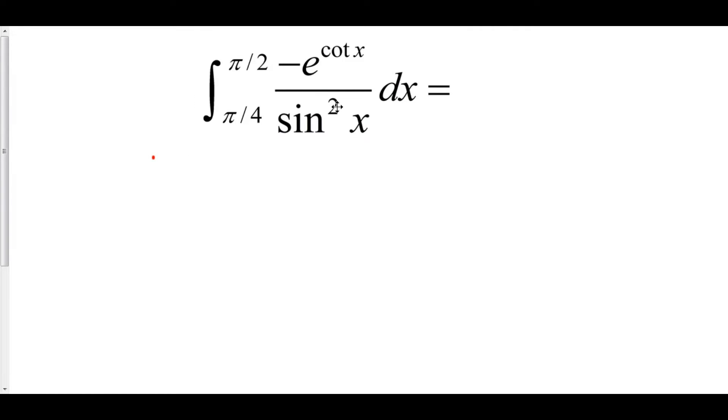Now what about sine squared of x? The derivative of sine squared of x, we have to use chain rule for this, is 2 sine of x times cosine of x. Well, there's no single sine of x and there's no cosine of x anywhere around here. So that's probably not going to help me out at all. There's one more thing to look at and that's cotangent x.